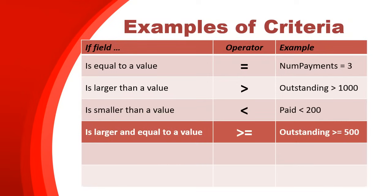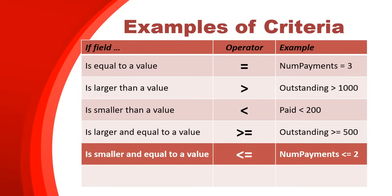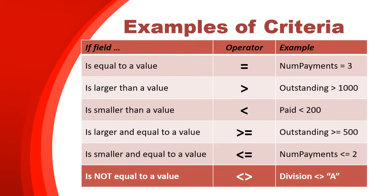Maybe you want greater than or equal to - for example, outstanding must be greater than or equal to 500 - or less than or equal to, where the number of payments is less than two. You can also compare things to see that they are not equal to. In computers the not-equal-to sign is normally the less than symbol and the greater than symbol together, making like a diamond or kite symbol. Just remember: not equal to - shine bright like a diamond.